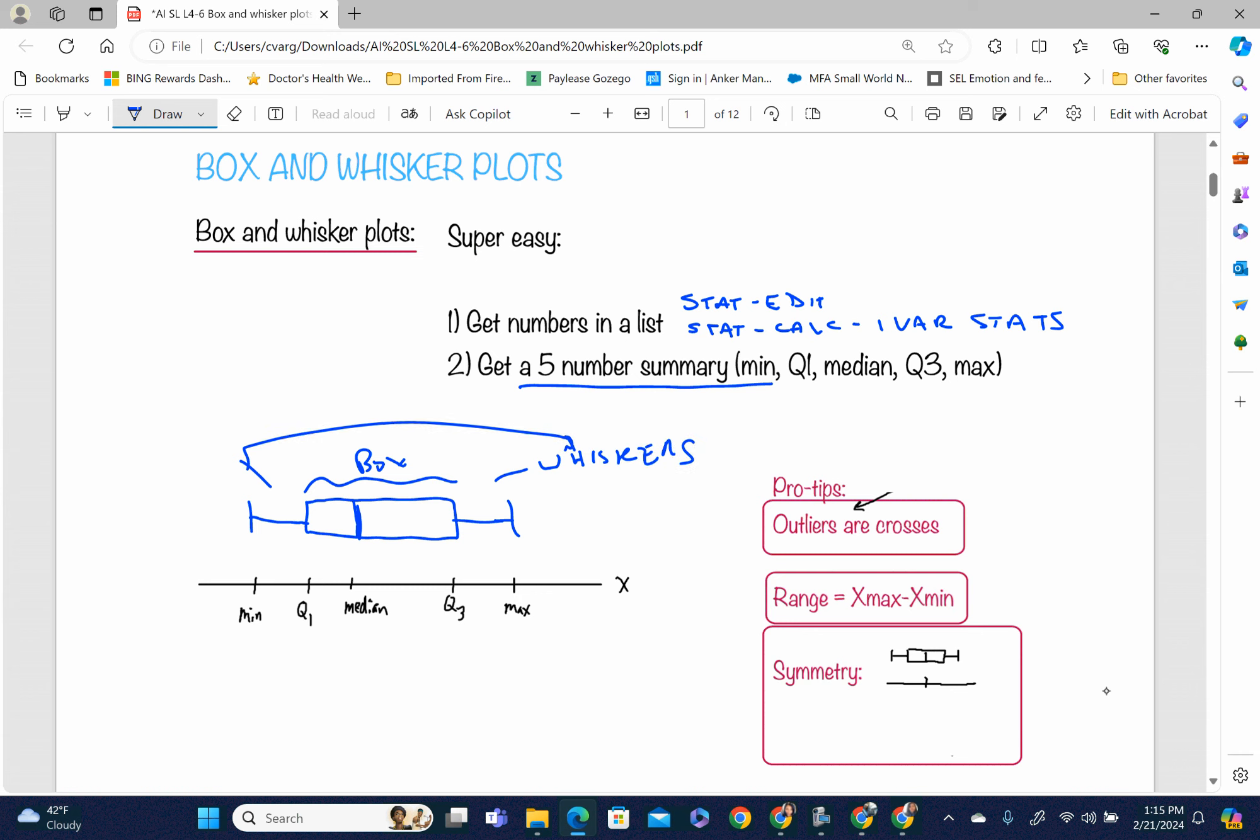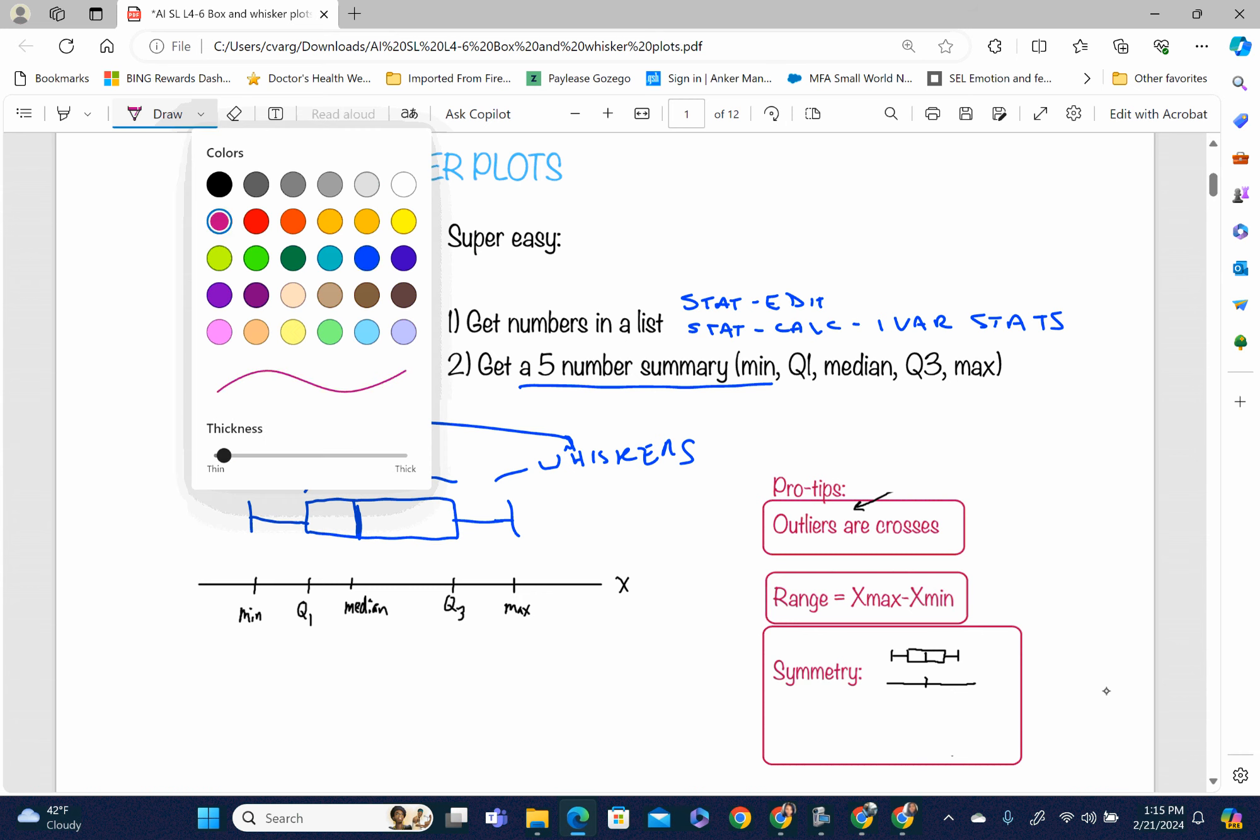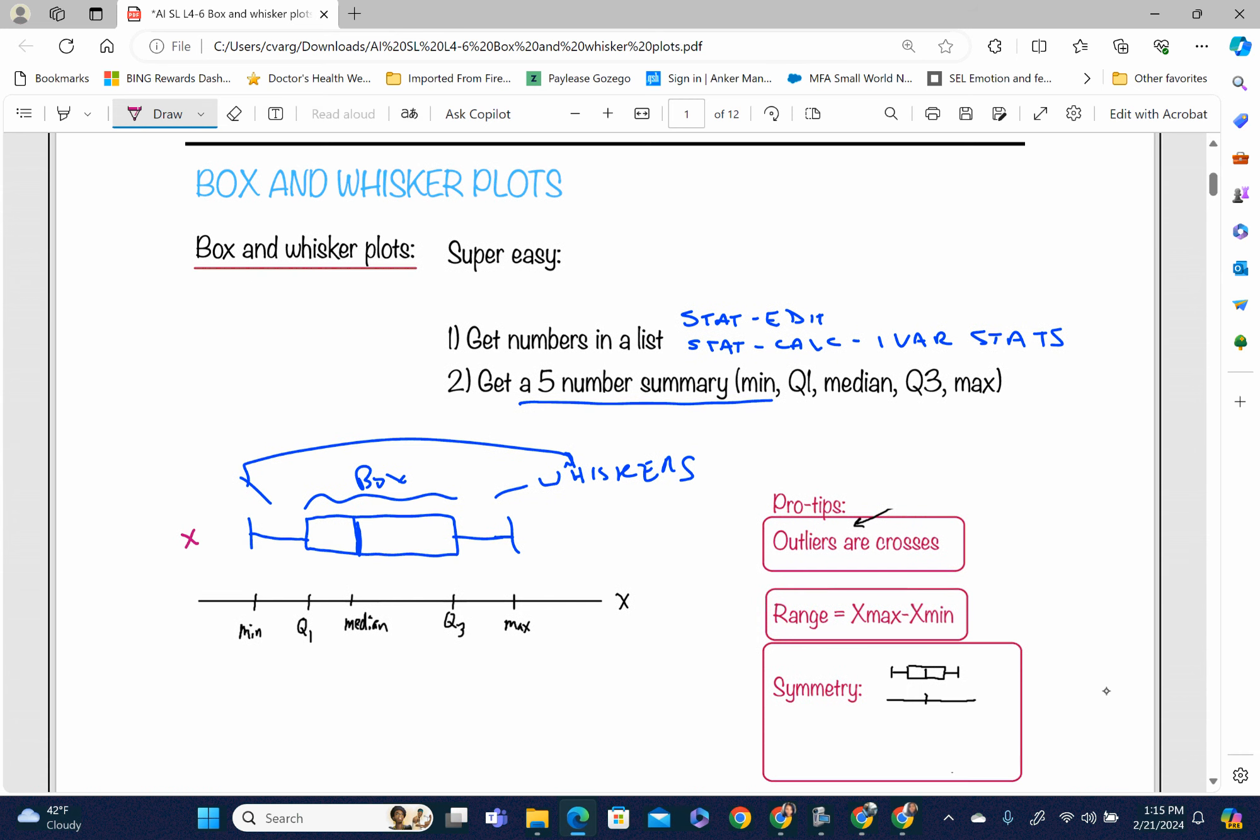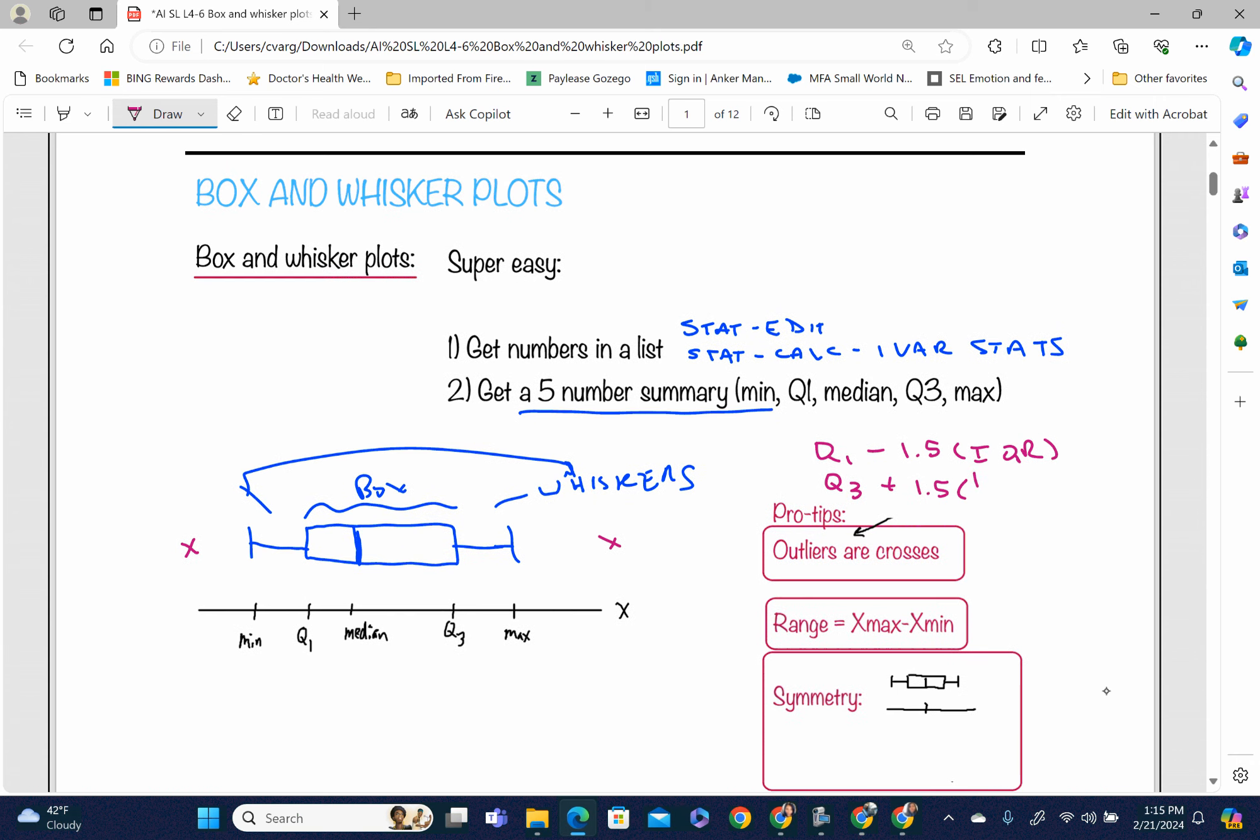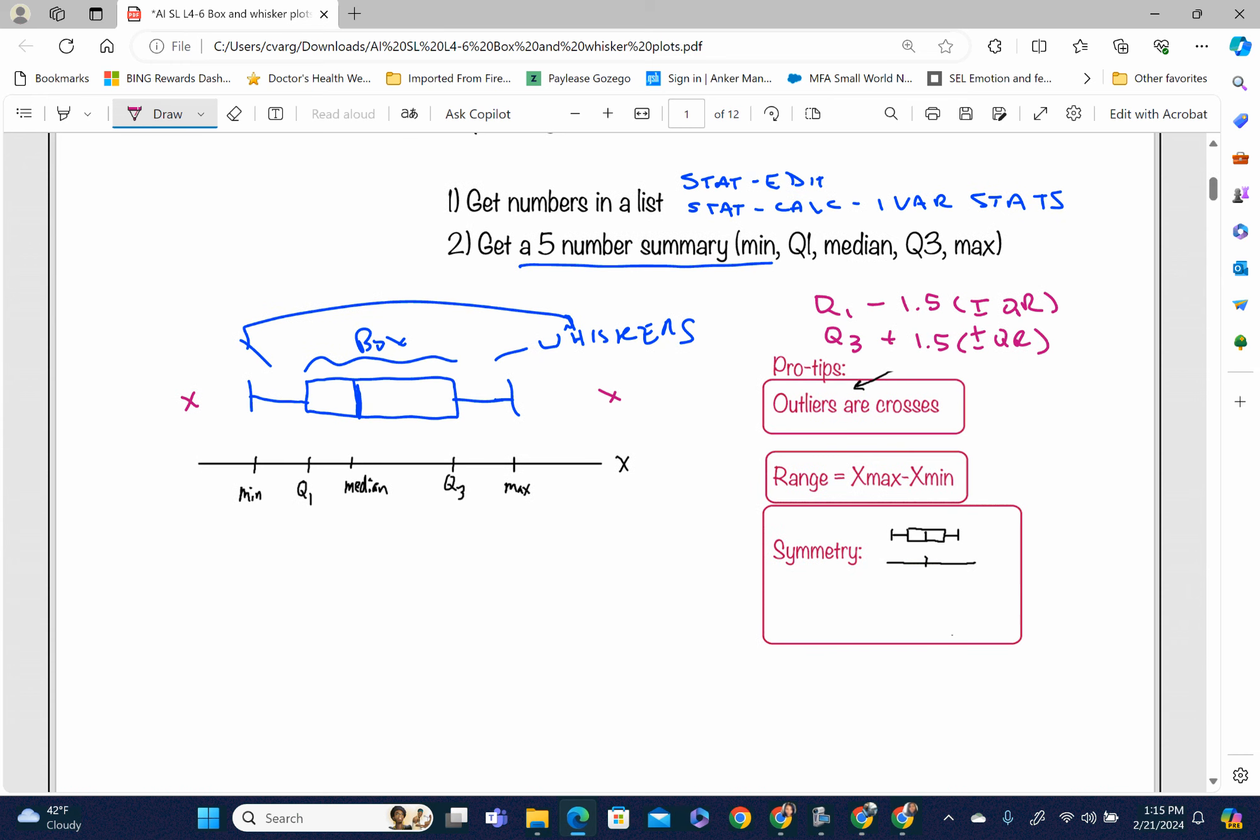Usually when we have an outlier, we represent them by using a cross. That's our outlier. Remember, our outlier formulas are Q1 minus 1.5 times our IQR, and Q3 plus 1.5 times IQR. We've done this a lot at this point, so we represent them by X's.